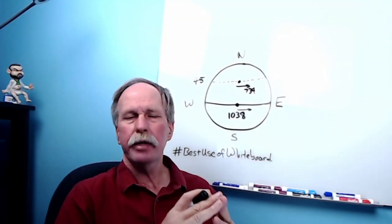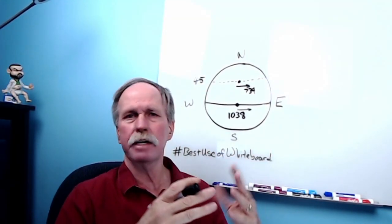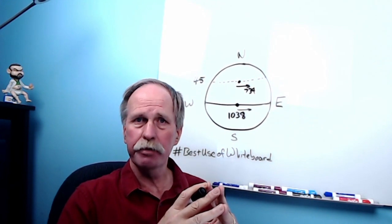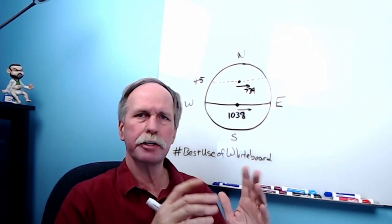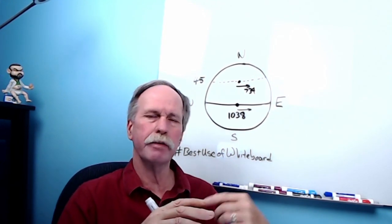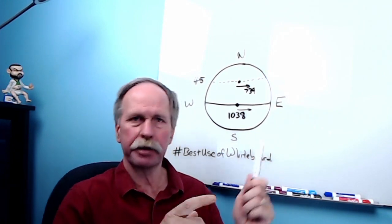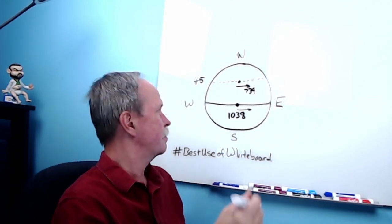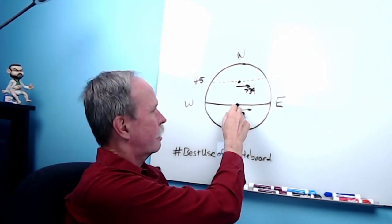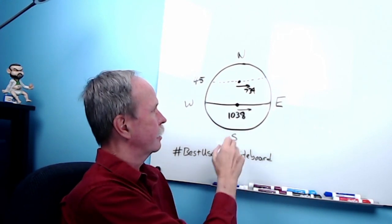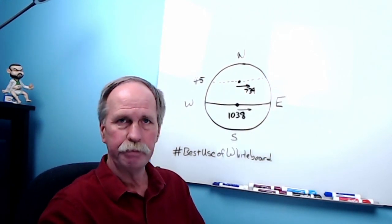When trying to deal with a new concept, one of the best ways to start is to start from something that you're familiar with. Now, many of us understand Coriolis when we're moving from south to north or north to south. Let me give you an example of that.